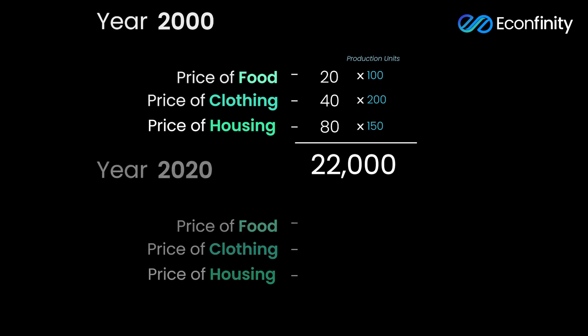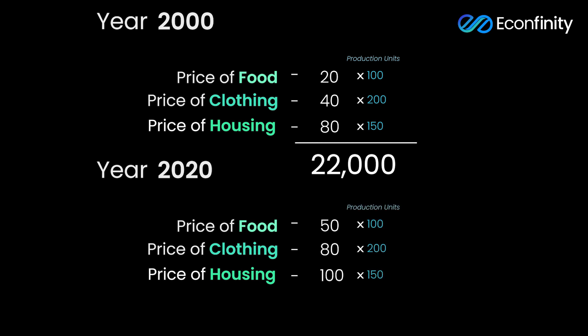Now let us look at 2020. The price of food is 50, clothing is 80, and housing is 100 — prices have clearly increased over the past 20 years. But let us assume production still remains the same: 100, 200, and 150. Now if we estimate GDP, the total comes to around 36,000. So technically, with absolutely no increase in production, just because price levels increased in 2020, we arrive at a much higher figure that looks overestimated, although production is still the same.